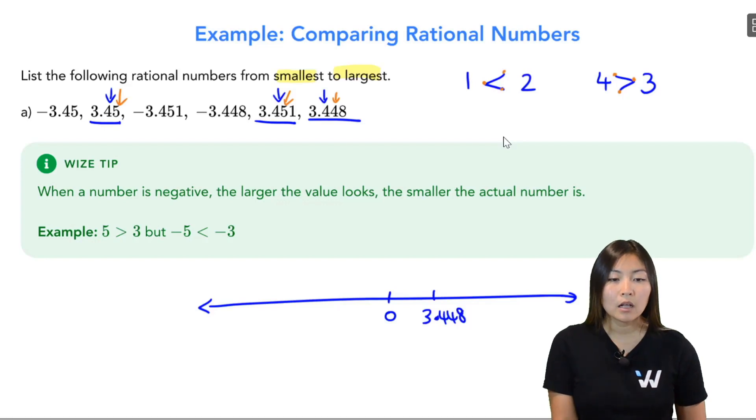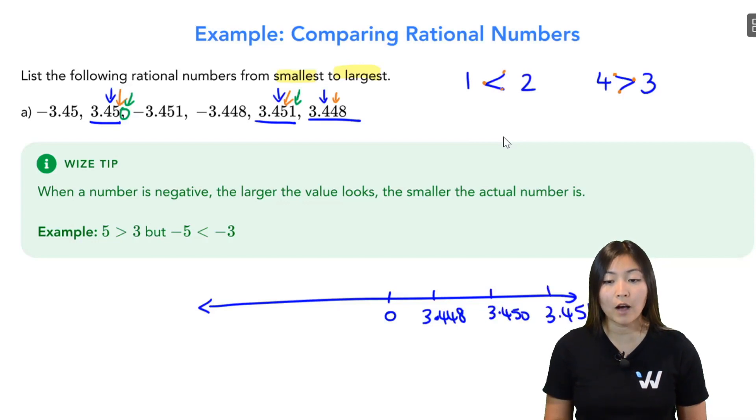Keep going. Looking at the next decimal place, there's nothing there. So I'm going to put a zero compared to this next decimal place, which is a one. So zero is smaller than a one. So my next number is going to be 3.450. And then finally, 3.451.